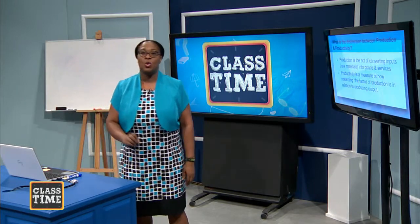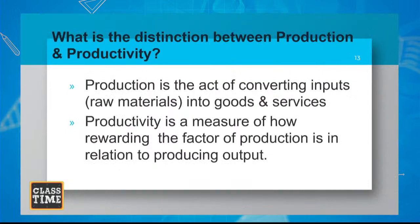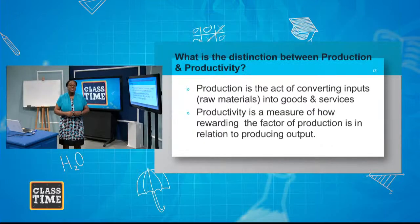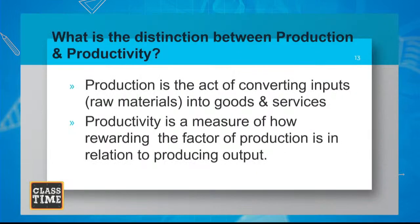This distinction between production and productivity is a very popular exam question. Production is the act of converting inputs — raw materials, factors of production — into goods and services. Productivity measures how rewarding the factors of production are in relation to producing a given level of output. One is the simple act of making goods, while productivity looks at the level of output produced given the inputs used in the production process.